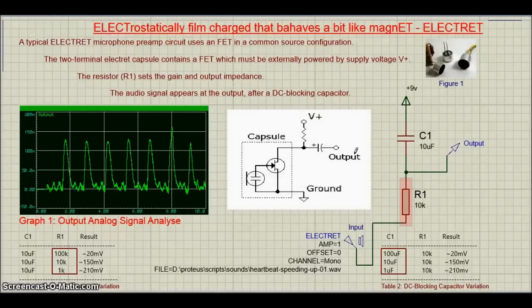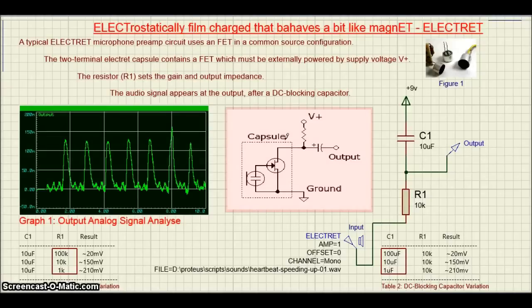This is a simple circuit with an Electret, a typical Electret microphone preamp circuit. It uses a FET in a common source configuration. The two-terminal Electret capsule contains a FET